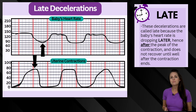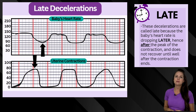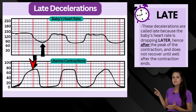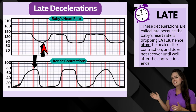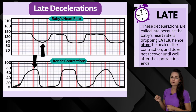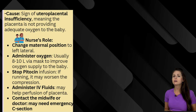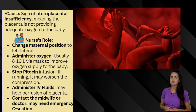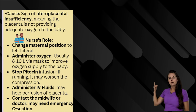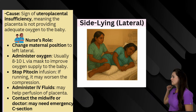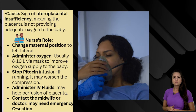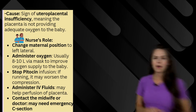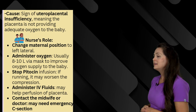Lastly, we have late decelerations. These are called late because the baby's heart rate drops after the peak of mom's contractions and doesn't recover until well after the contraction has ended. You can see that baby's heart rate drops after the peak of the contraction and doesn't recover until well after it's over. This is typically caused by uteroplacental insufficiency — the placenta is not working like it should and not delivering the oxygen the baby needs. Interventions include changing mom's position, administering oxygen, stopping Pitocin, infusing fluids to help perfuse the placenta, and notifying the midwife or doctor because the patient likely needs an emergency C-section.